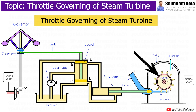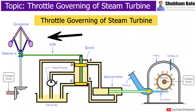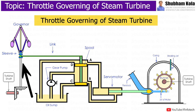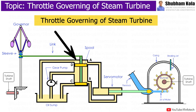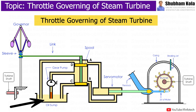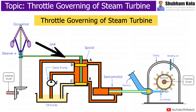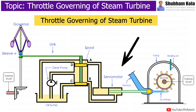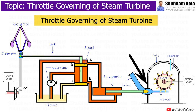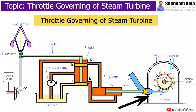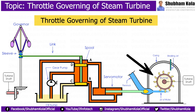Now suppose the load on the generator is suddenly increased — this leads to a reduction in rotational speed of the turbine and governor. Due to this, the governor brings the spool inward and the sleeve goes down, pushing the spool in the downward direction. Hence, oil under pressure flows through pipe B to the bottom side of the servo motor, while ports A and D are free for oil return. Oil enters inside the cylinder and pushes the piston, operating the throttle valve to increase its opening, allowing more steam to pass through the turbine, which hikes the speed of the turbine again.